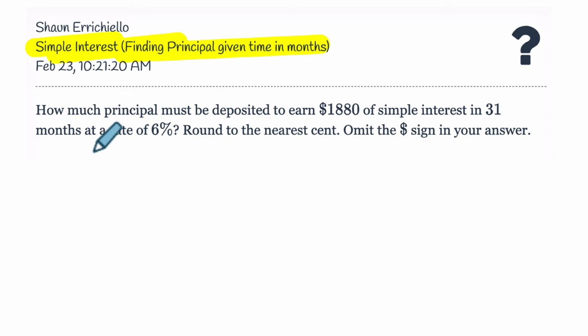Okay, so let's read the question. It says, how much principal must be deposited, that means put into an account, to earn, let's highlight this, $1,880 of simple interest in 31 months. Okay, at a rate of 6%. We're going to round our answer to the nearest cent, so that's hundredth in decimal form. And we're omitting our dollar sign in the answer.